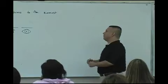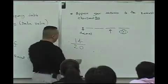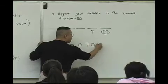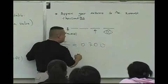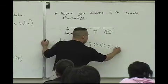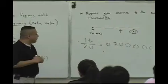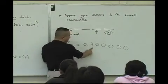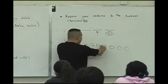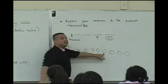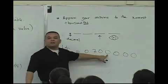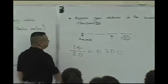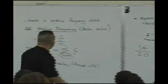You guys ready? What is 14 divided by 20? You get .700. Good. Now, how am I going to approximate this to the nearest thousandths? The seven is in the tenths, hundredths — thousandths place. Look at the next number to the right; that's a zero. Do I add one to the zero? No — I leave it alone.